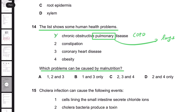So number one is not correct. Number two is constipation, which is caused by malnutrition — specifically caused by lack of fibers. If there's a lack of fibers, then there's a lack of peristalsis. If there's a lack of bowel movement, the food molecules remain large in size, and that causes constipation.